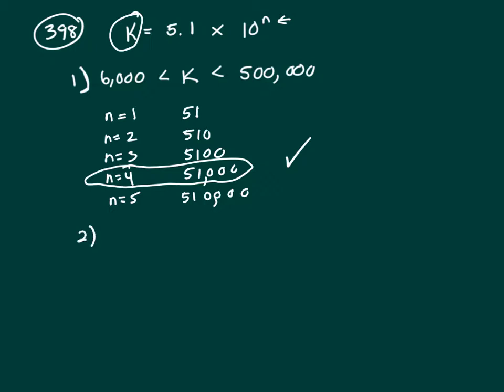Now let's look at clue two. Clue two says k squared equals 2.601 times 10 to the ninth. Once again, we're trying to find the value of k. So let's solve this equation for k, and we do that by taking the square root of both sides.